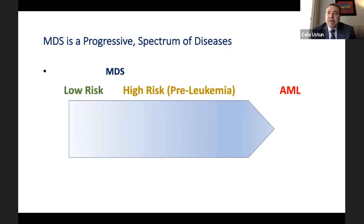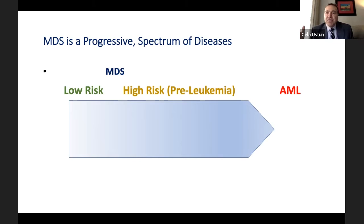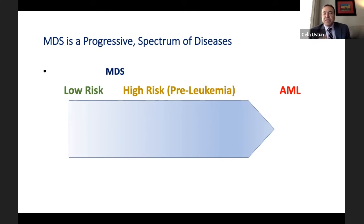I want to talk about three diseases and transplantation: MDS, aplastic anemia, and PNH. Starting with MDS — MDS is an older patient's disease, and it is a spectrum. It's not one single disease. Everybody has different presentations. It is progressive — we need to remember that. Patients can be at low risk or high risk, depending on their blood counts and genetic markers. We have very good scoring systems.